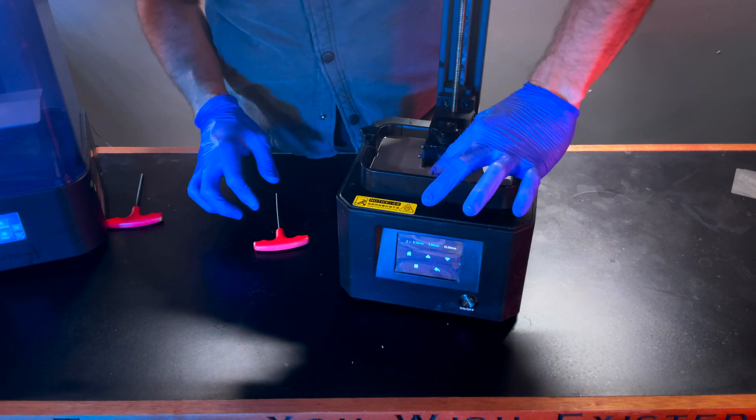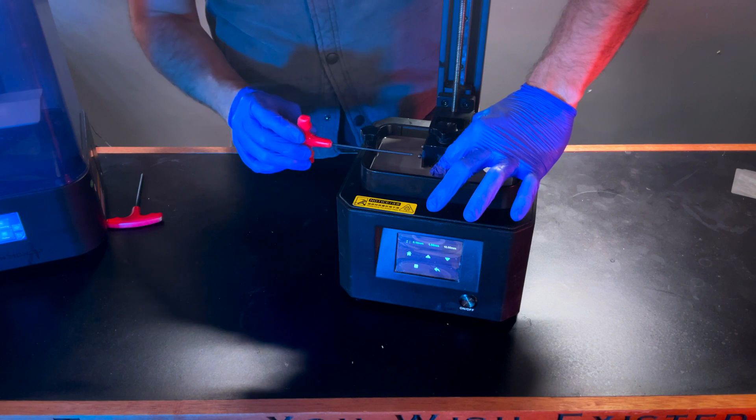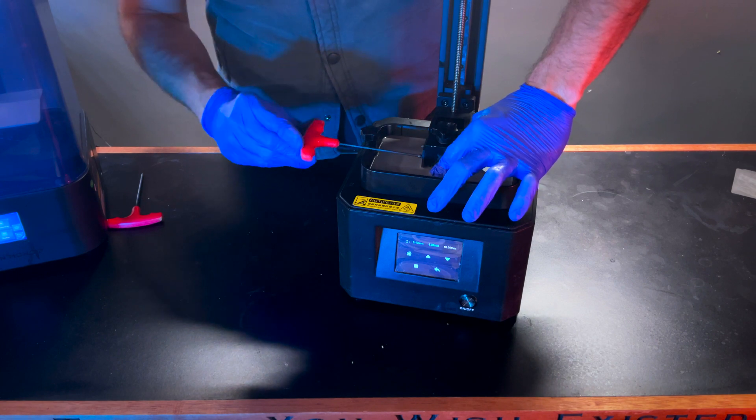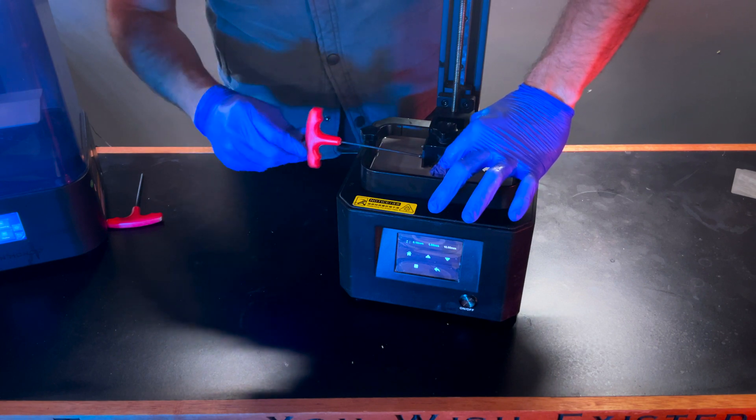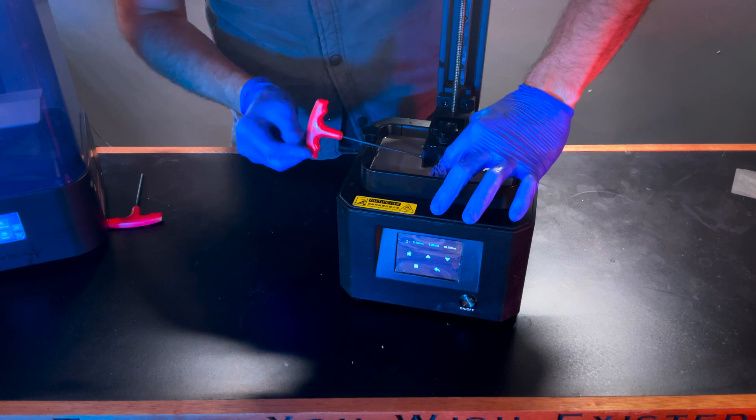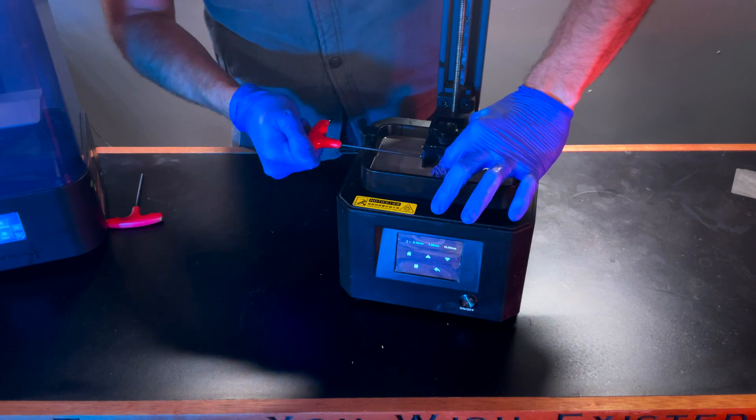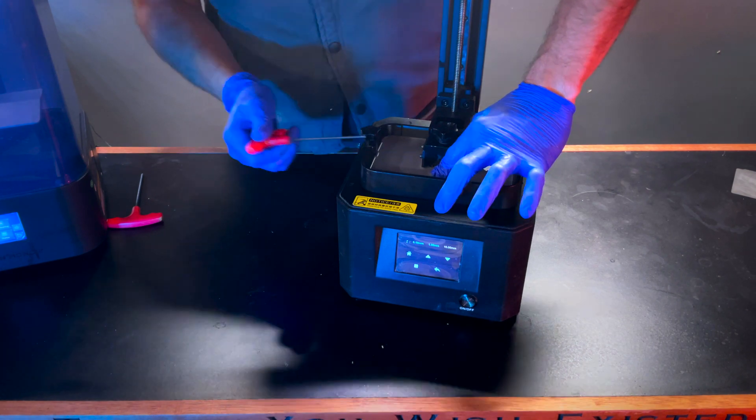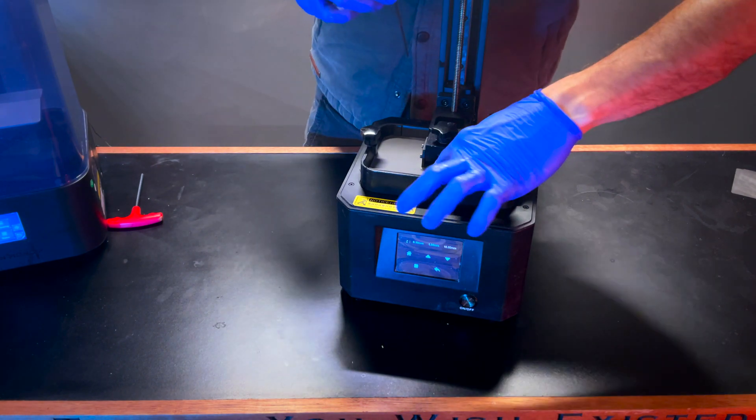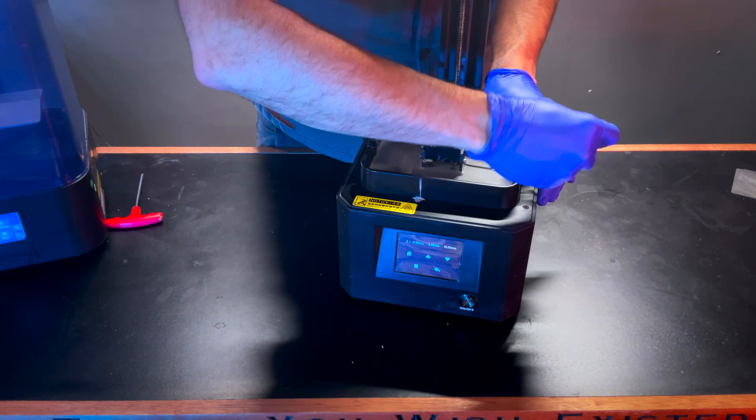And again, it's gentle downward pressure, and then once you've got it flush against the bottom, you're going to go ahead and, just like before, using a criss-cross method, alternating front to back, lock into place these four screws.